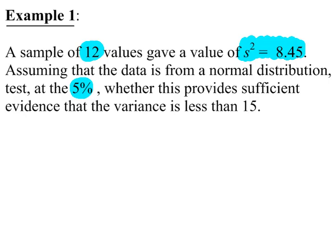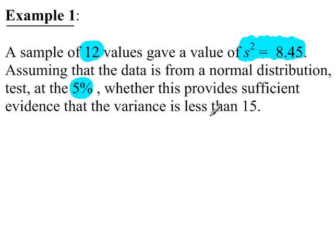Example 1: a sample of 12 values, so N is 12, has a sample variance of 8.45. We're assuming that the data is normally distributed, so that condition is met. We have to assume that the sample is random, otherwise the hypothesis test would be invalid. We're going to use a 5% significance level, and it's a one-tailed test. We're testing to see if the variance is less than 15.